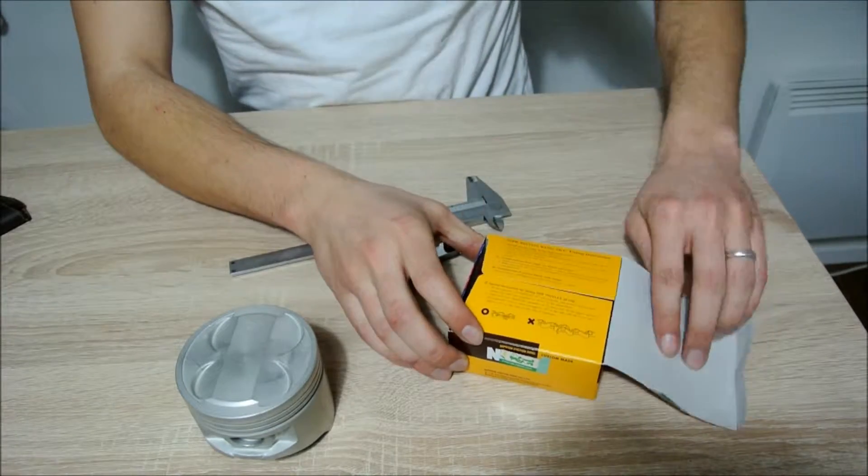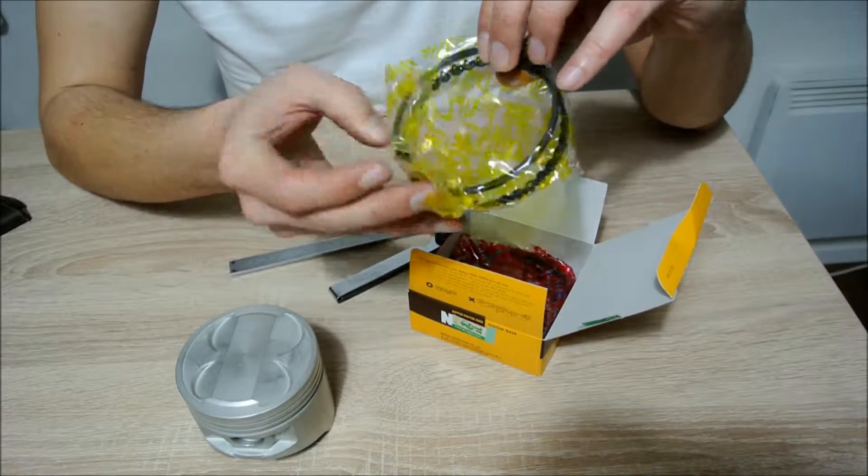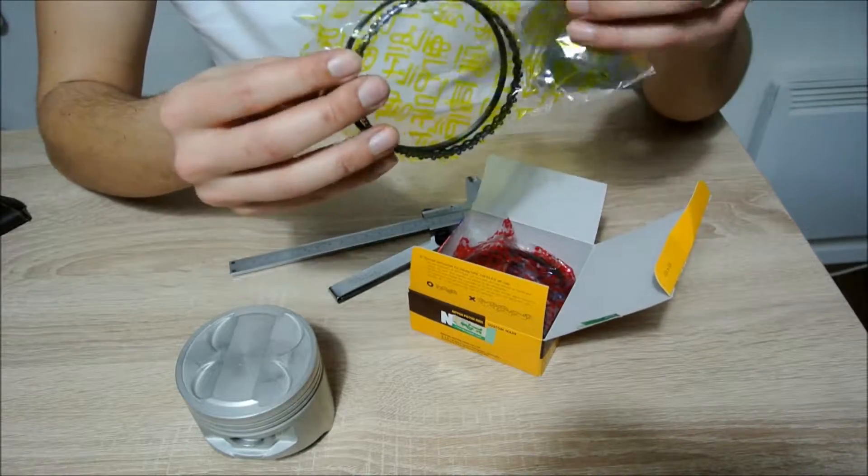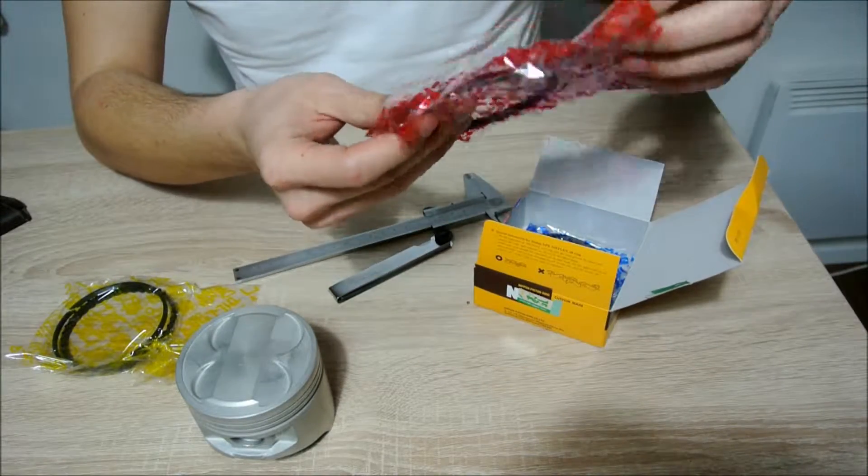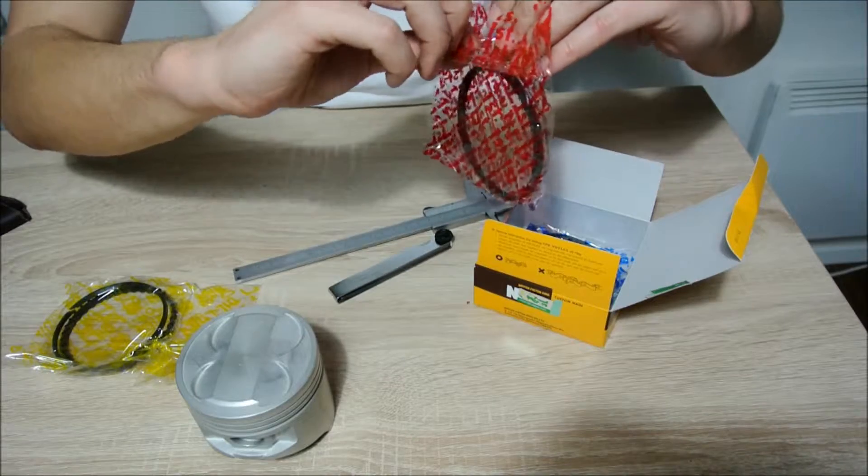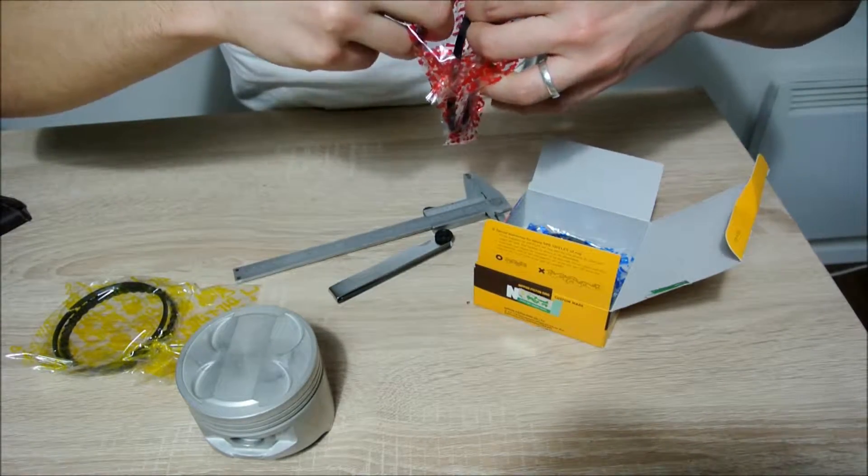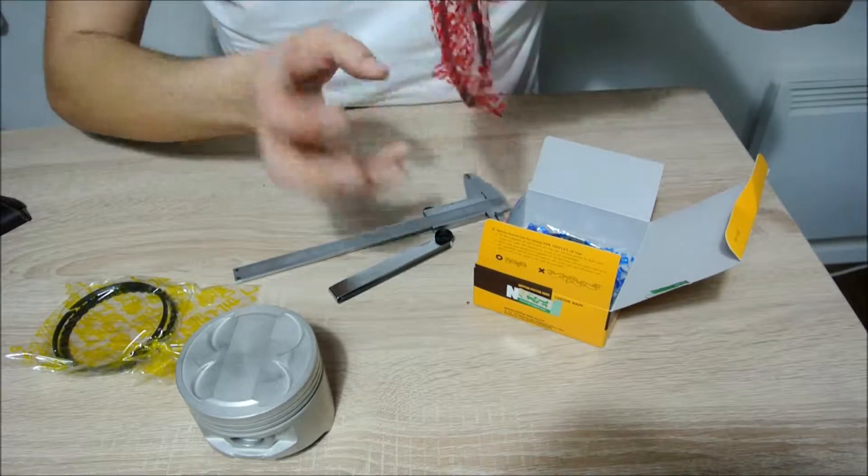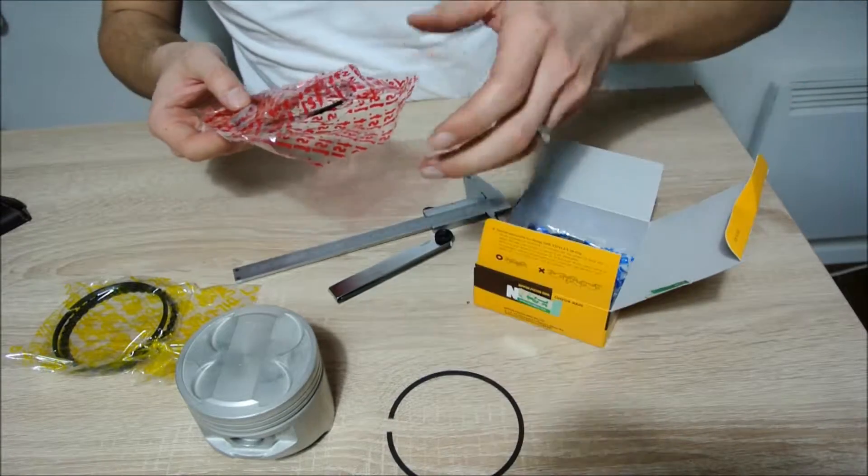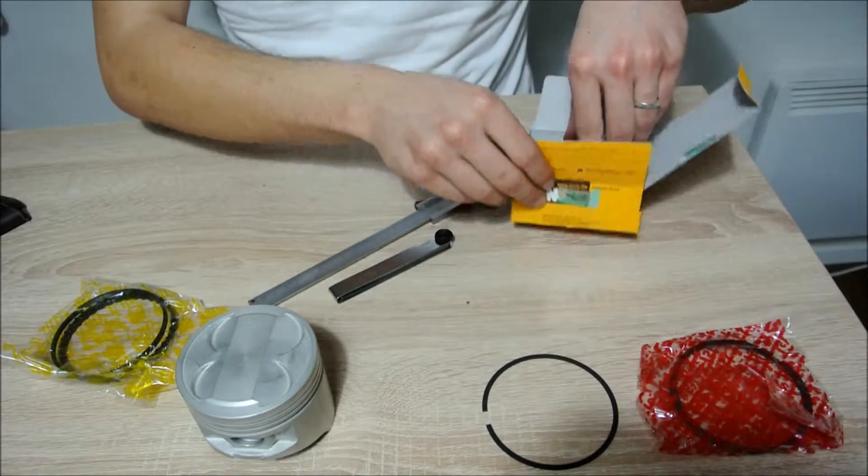I'm going to take out the piston rings. Here we have the oil rings and inside are the compression rings. I'll take out one compression ring. As you can see on the packaging this is the first compression ring. Here we have one, the first compression ring. I'll put them right next to there so I don't mix them up.